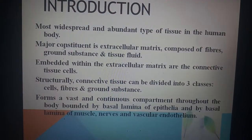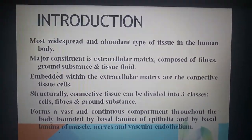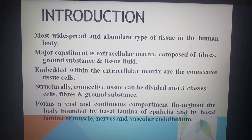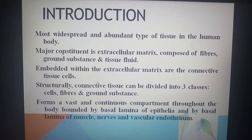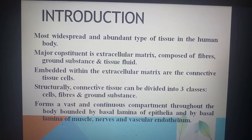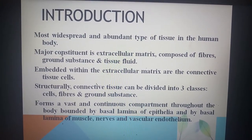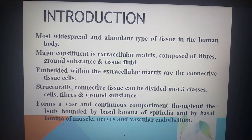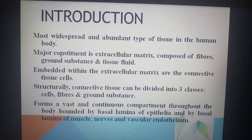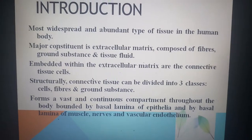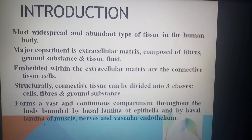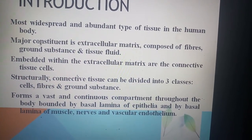First, introduction: connective tissue is the most widespread and abundant type of tissue in the human body. Its major constituent is the extracellular matrix, which is composed of fibers, ground substance, and tissue fluid. Embedded within the extracellular matrix are the connective tissue cells. So mainly, connective tissue has three components: cells, fibers, and ground substance.